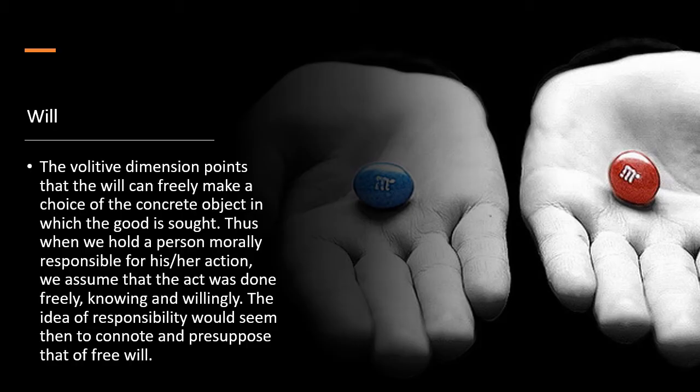The next is the volative dimension, which is the will, which points that the will can freely make a choice of the concrete object in which the good is sought. Thus, when we hold a person morally responsible for his or her action, we assume that the act was done freely, knowingly, and willingly.